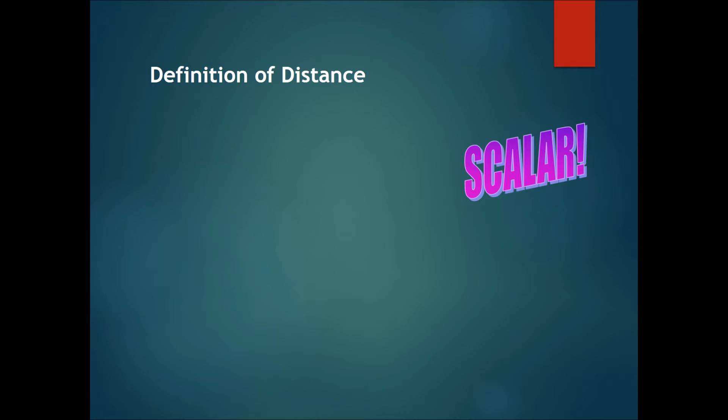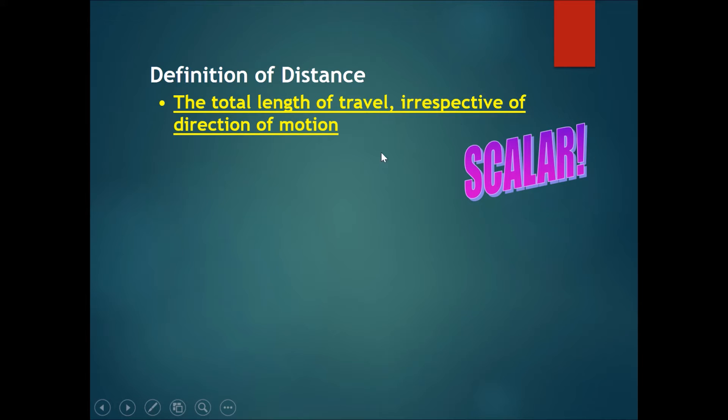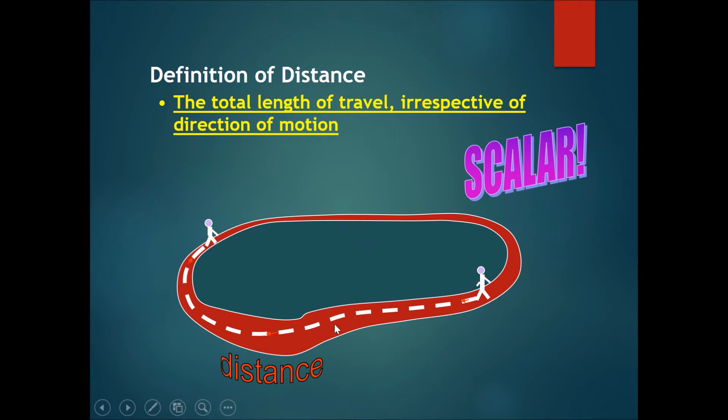So now let's talk about the definition of distance. The total length of travel, irrespective of direction of motion, is your distance. If this was a running track and this guy chose to walk all the way from here to here, distance is a scalar. To get the distance, you need to measure the exact length which this guy walked until he got all the way here.